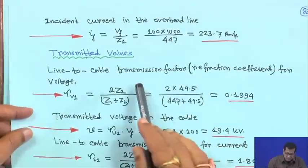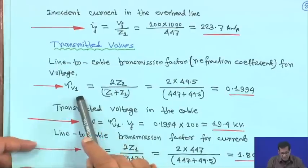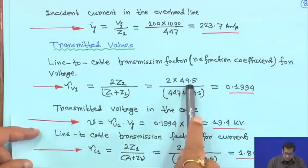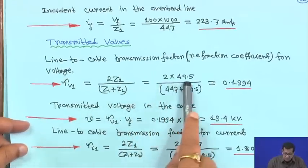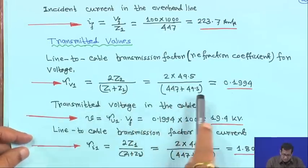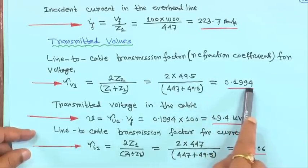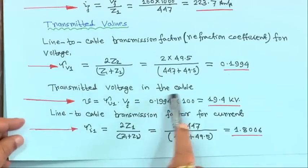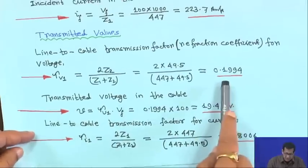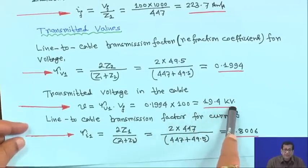The line-to-cable transmission factor, that is the refraction coefficient for voltage, tau_V1 equals 2·Z2 upon (Z1 + Z2). With Z2 equal to 49.5 and Z1 equal to 447, tau_V1 comes to 0.1994. Therefore, transmitted voltage in the cable equals tau_V1 × Vf, which is 0.1994×100 kV, giving 19.94 kV.